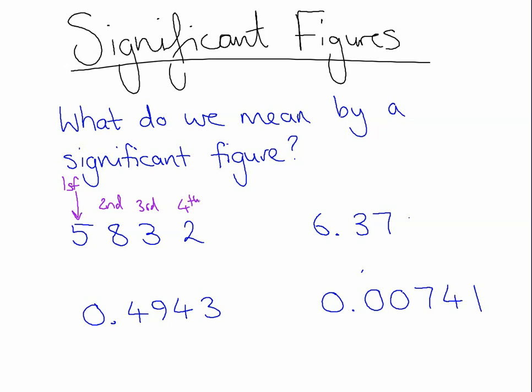Let's have a look at the next one. I can see this is 6.37. This is telling me that I have some units — I can see there's no tens, so I know exactly what size this number is. So 6 is playing a significant role. That's the first significant figure, that's the second, and this is the third significant figure.